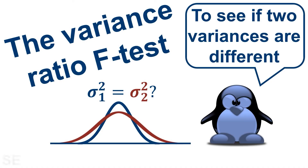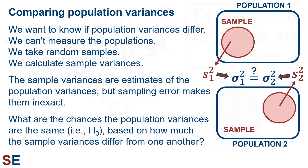The simplest way to test whether two variances are equal is to test their ratio using a variance ratio F-test. Our basic question is whether population variances differ from one another. We can't measure the populations directly because this is usually impossible. We therefore take random samples from the two populations and calculate their sample variances. The sample variances are our estimates of the population variances, but sampling error makes them inexact. Even if we have good samples, the chances that their variances are exactly the same as the variances of the populations they came from is practically zero.